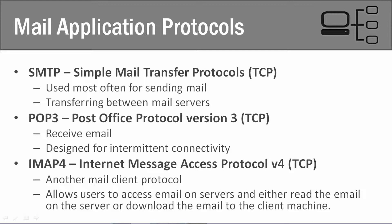SMTP and POP3 have been around for quite some time and IMAP4 is a newer version. SMTP is a protocol that we use for sending emails — it allows you to transfer emails between different mail servers. So if you're on Gmail or Outlook and you type up an email and send it, you're going to use SMTP to send that email from your browser or client off to the mail server, which then sends it to another email server.